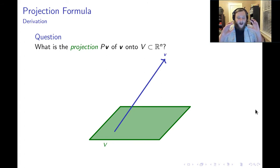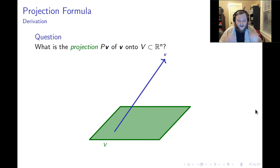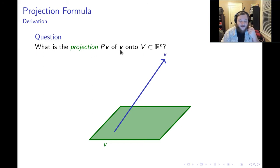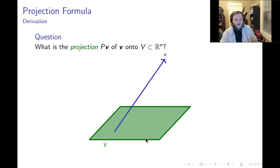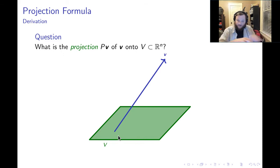Now, I want to think about the general situation, which is much more complicated, but the ideas are the same. In general, what we want to do is figure out how to project some vector onto any vector space V. I want you to look at this figure here. I've drawn this plane V, and this plane is meant to represent some vector space V.